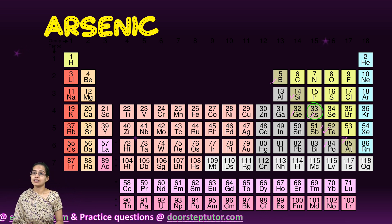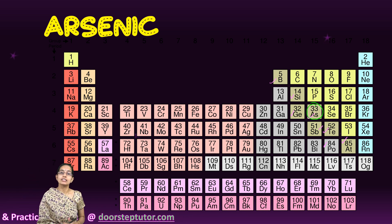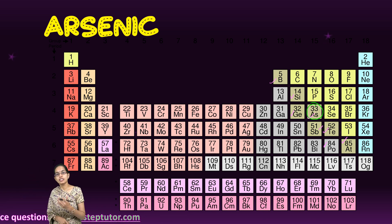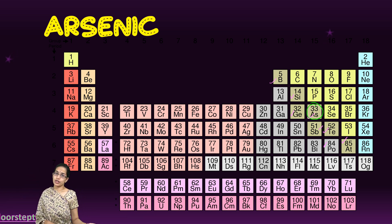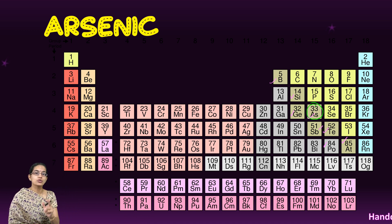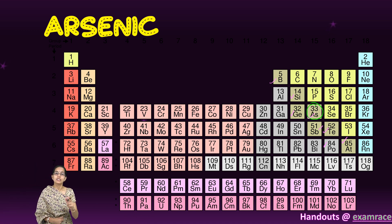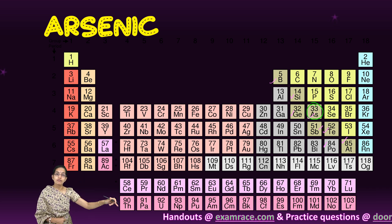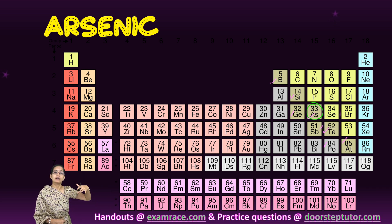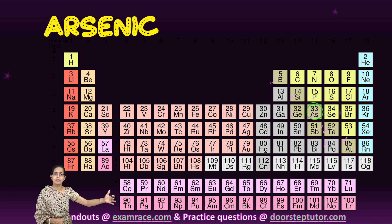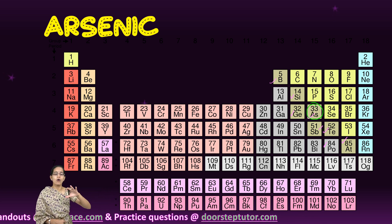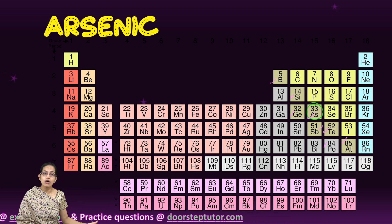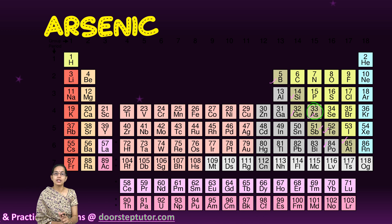Arsenic is very unique. It is found in groundwater as well as river water, but the concentration found in groundwater is much higher. It is a very costly affair in terms of the process of contamination and the removal of arsenic from groundwater.